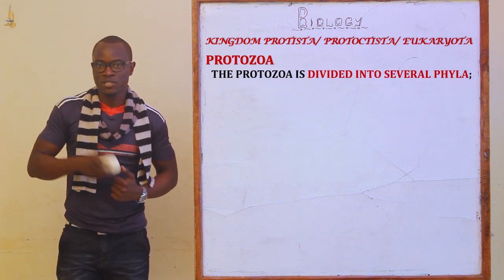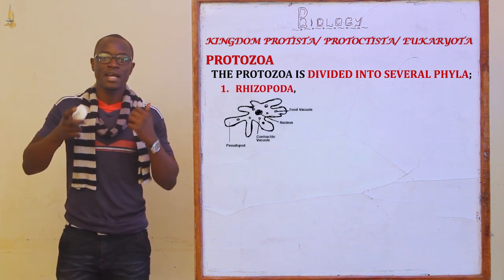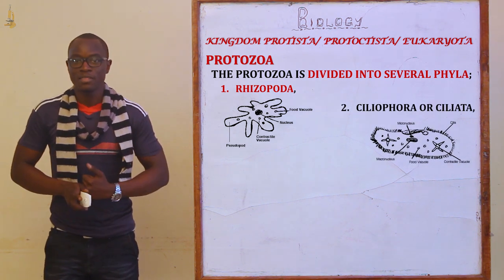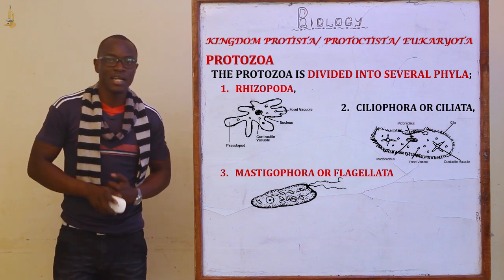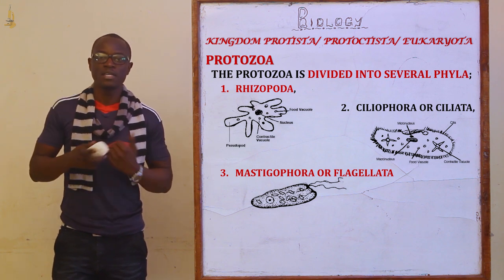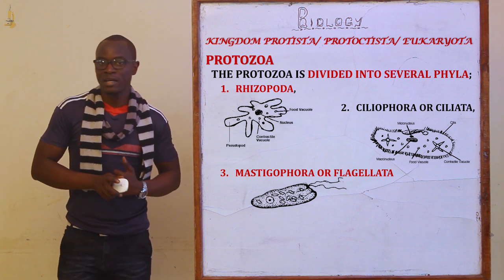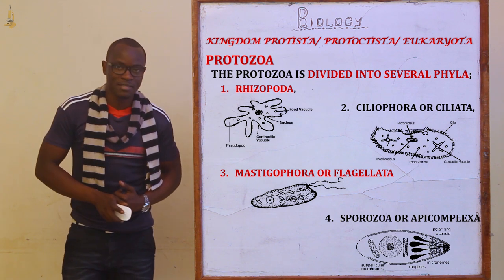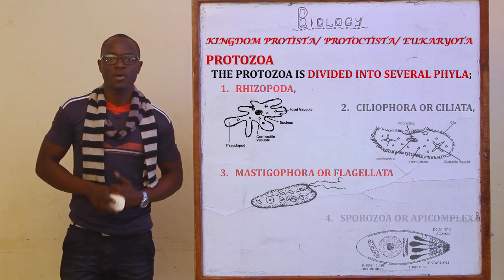The protozoa is divided into several phyla. The first phylum is phylum Rhizopoda. The next one is phylum Ciliophora, or Ciliata. Then the next one is Mastigophora, or Flagellata — flagellata meaning that they use flagella for movement. Ciliata means that they use cilia for movement. And finally, the last one is Sporozoa, or Apicomplexa. We will meet in the next session to look at and discuss more on phylum Rhizopoda.